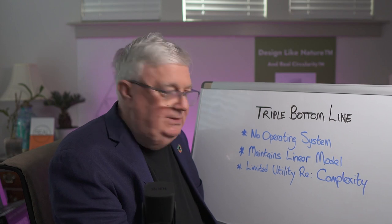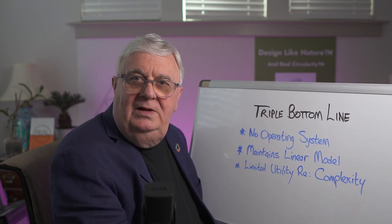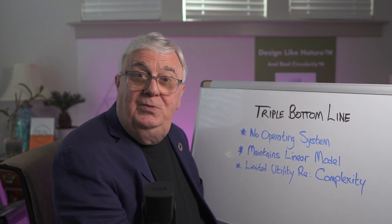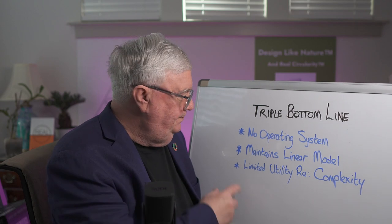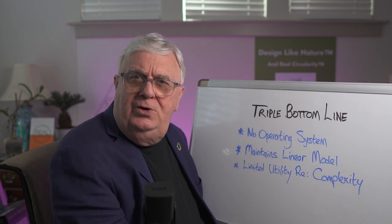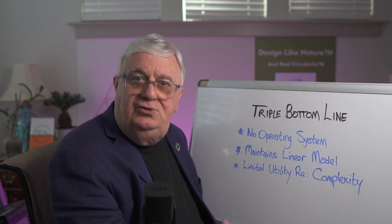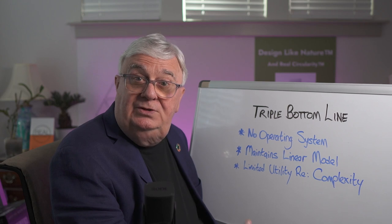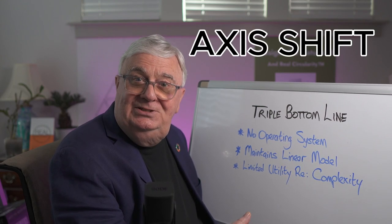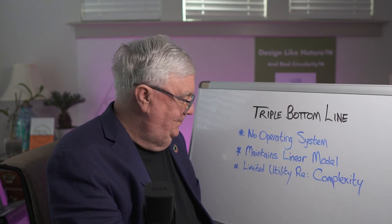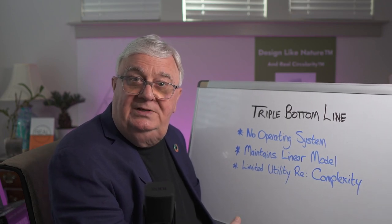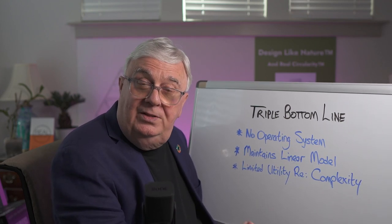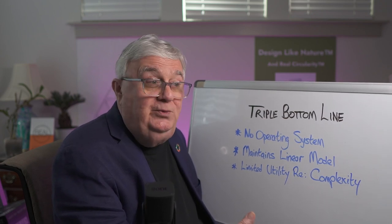So how are we going to deal with each of these three things? The first one is we need to have a system that has an operating system, and the only one we know that works sustainably is that of nature. So I'm going to be talking about nature's operating system. When it comes to maintaining the linear model, we have to go through another transformation in order to come up with the alternative. And lastly, we have to have a model that is robust enough to deal with the complexity, with the facility to go from macro to macro and zoom in and out as we need to, to interrogate the model and get deeper into these areas of complexity which we can't just ignore.